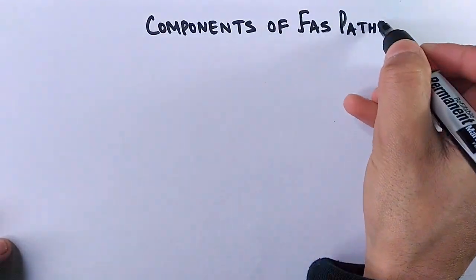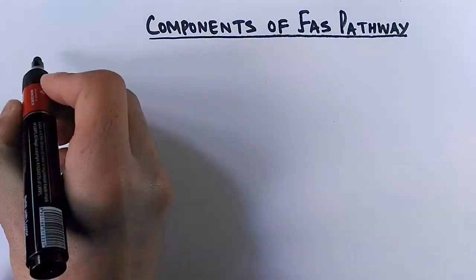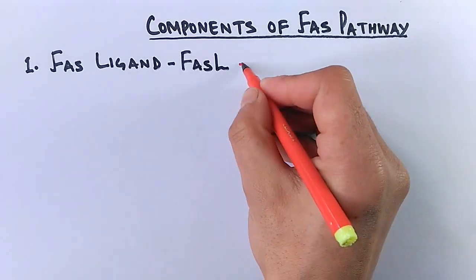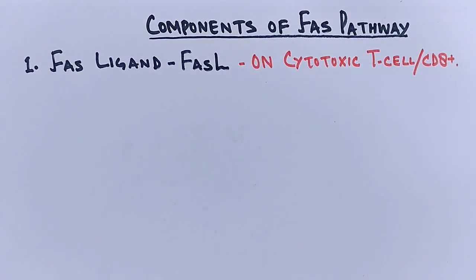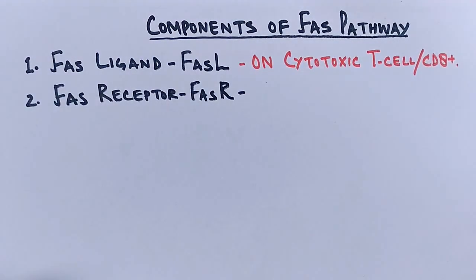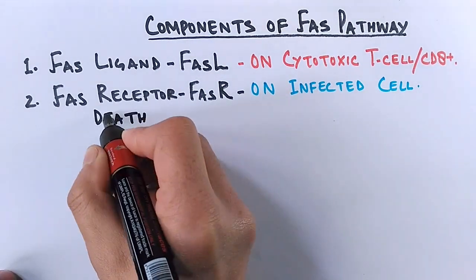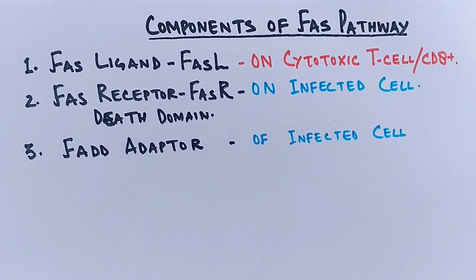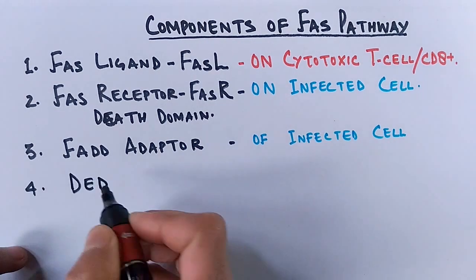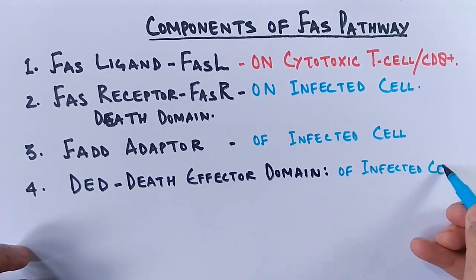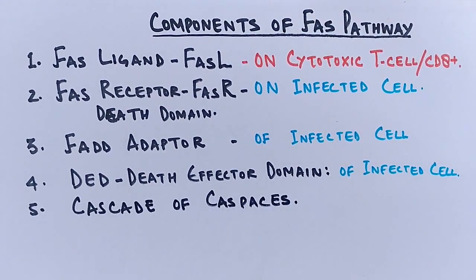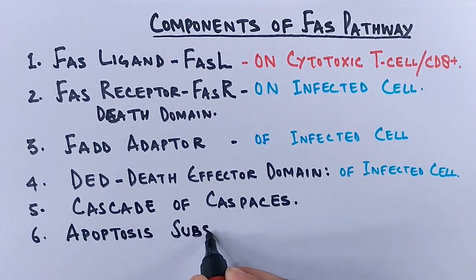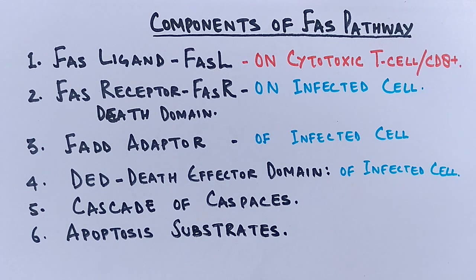The components of the FAS pathway that interact with each other are: first, FAS ligand (FASL) present on the cytotoxic T cell (CD8-positive cell), spanning its membrane. Second, the FAS receptor — also called the death receptor — present on the infected cell to be eliminated. Third, the FADD adapter protein, present inside the membrane of the infected cell. Fourth, DED (death effector domain) present on the FADD. Fifth, a cascade of caspases that get activated by these interactions. Sixth, apoptotic substrates that get activated, ultimately leading to programmed cell death — apoptosis.